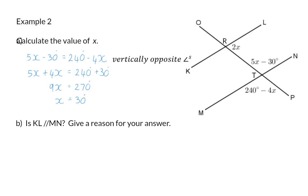Question B: Is KL parallel to MN? Give a reason for your answer. We have just determined the value of x. This means I can now go and calculate the actual size of angle RTN, as well as the size of angle LRT. Angle RTN was given as 5x minus 30 degrees, but we now know that x is 30 degrees, so we have 5 times 30 minus 30, which means the angle is 120 degrees.